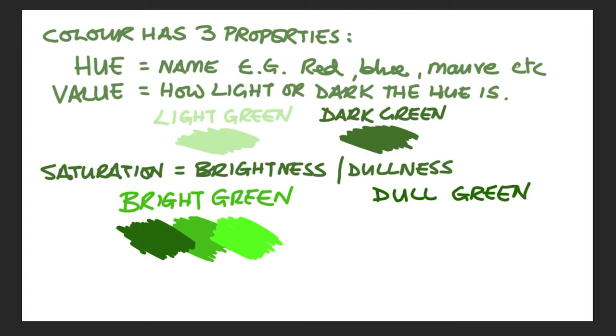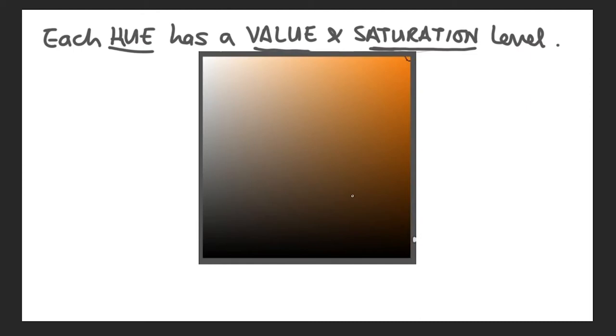And then examples of dull green, high value, mid value, and low value. And you can see there they're all veering towards gray, but they are still technically green. High and low saturation. So every single hue, every single color has its own value and saturation levels.